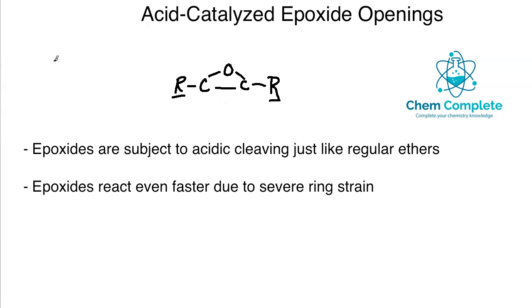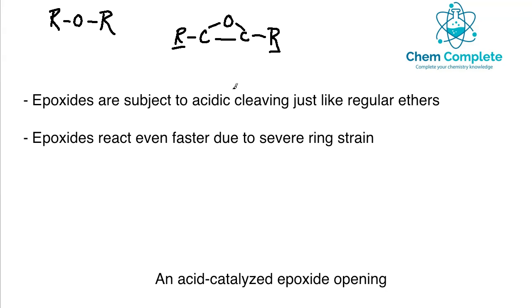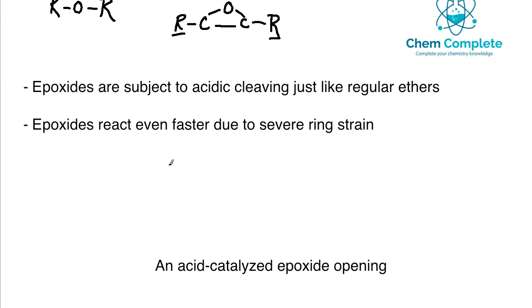If we take a normal ether such as R-O-R, this would be subjected to acidic cleavage with a strong enough acid and usually a little heating. Epoxides can also undergo acid cleavage, but epoxides react even faster due to the fact that they have severe ring strain. They become more reactive because they're less stable.